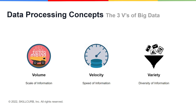There are three V's with which you can properly define big data. The first one is volume — the size of the information being managed by the data processing systems. The second V is velocity, defined as the rate at which you can process data. That means looking at how quickly the system can ingest, analyze, and visualize or use the data that it is being fed.